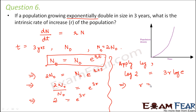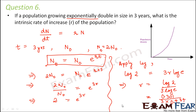Therefore, r = log 2 / (3 × log e). The value of log 2 is 0.301, divided by 3 times log e which is 0.434. Therefore, the value of r comes out to be 0.2311. This is the intrinsic rate of increase of the population.